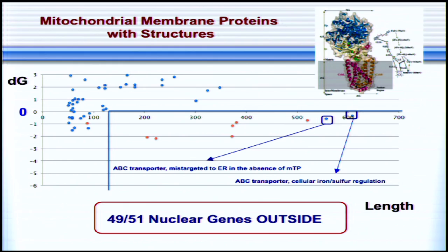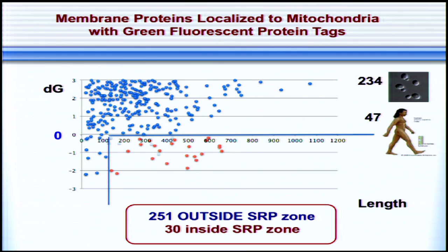We also looked at membrane proteins localized to mitochondria with green fluorescent protein tags — a more noisy but larger dataset with more than 280 proteins, mostly from yeast but also a few from humans. Again, the large majority are located outside the SRP zone. About 30 were located inside, and several of these had exceptionally strong mitochondrial targeting peptides, and a few are annotated as being used in both mitochondria and the endoplasmic reticulum. When we went back to the literature, this hypothesis could possibly explain previous observations, for example of COX2 in legumes transferred into the nuclear genome, where the hydrophobicity of the first transmembrane domain was reduced in the nuclear copy — fully consistent with the hypothesis that it was reduced to avoid recognition by the SRP particle.